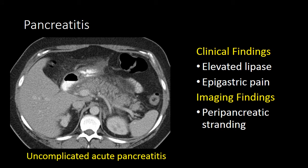For uncomplicated acute pancreatitis, we often see fat stranding around the pancreas. In this case, we see the peripancreatic fat is inflamed and therefore has what we describe as stranding. Clinically, patients often will present with an elevated lipase and epigastric pain. If you have any two of these three clinical or imaging findings, you can diagnose acute pancreatitis.